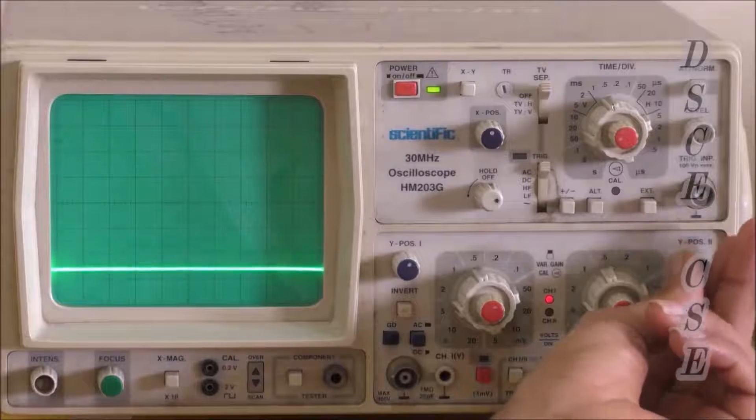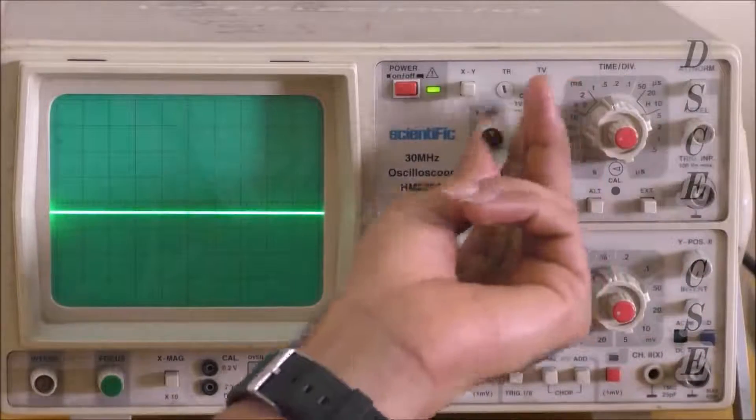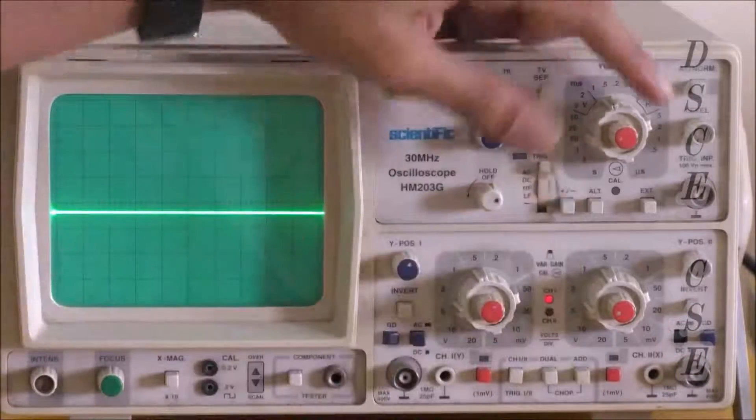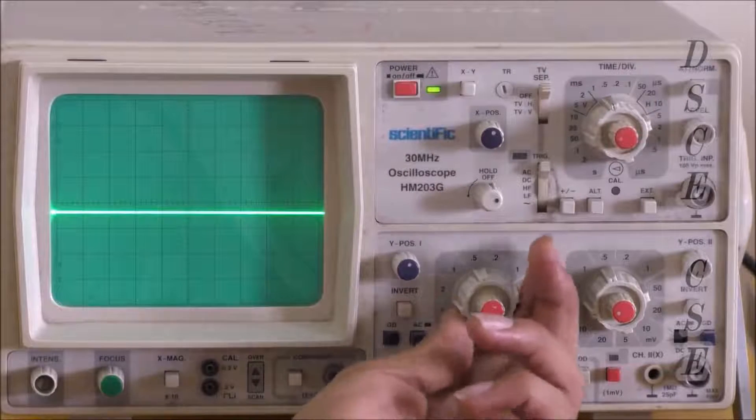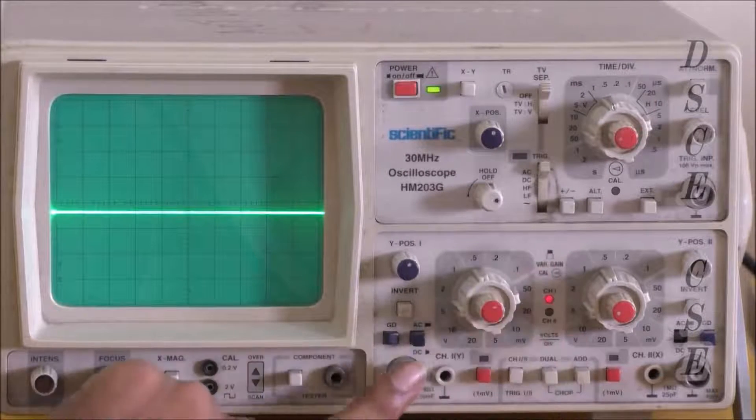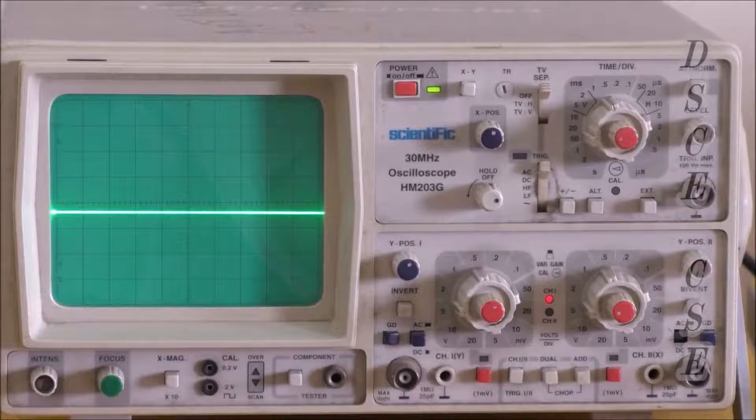You can adjust the Y axis and X axis. This is the time period knob which is used to set the time period and this is the voltage knob used to set the voltage. This is the socket for the probe.